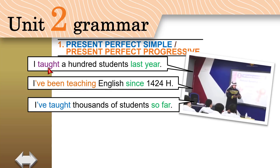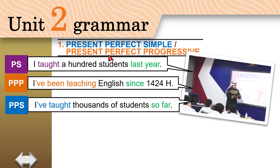In purple is what we call the past simple. In orange is the Present Perfect Progressive — PPP. In blue is the Present Perfect Simple. What is the difference between the three, and when do we use them?